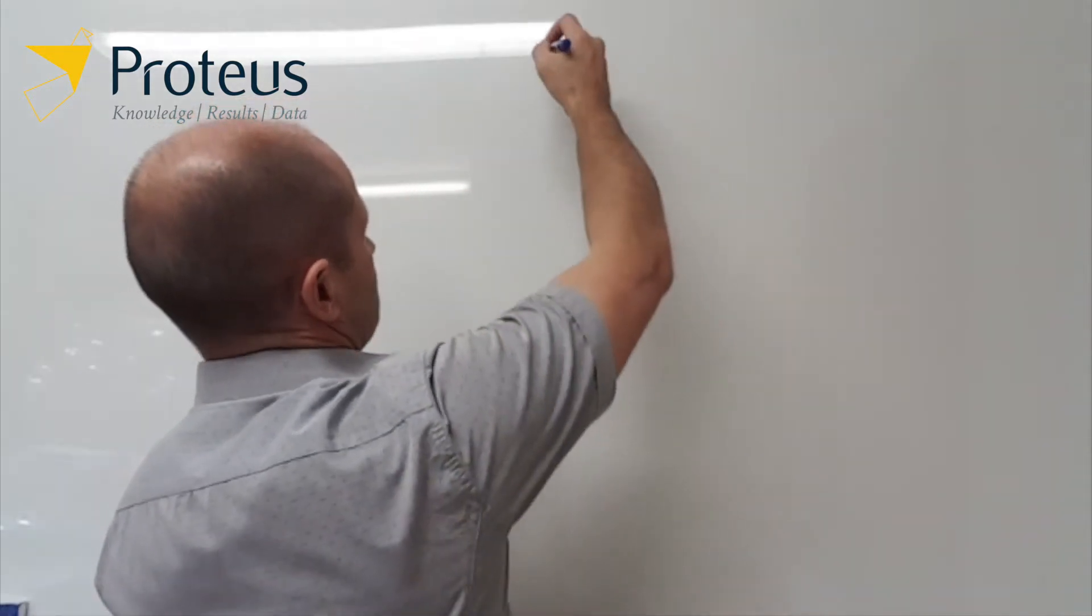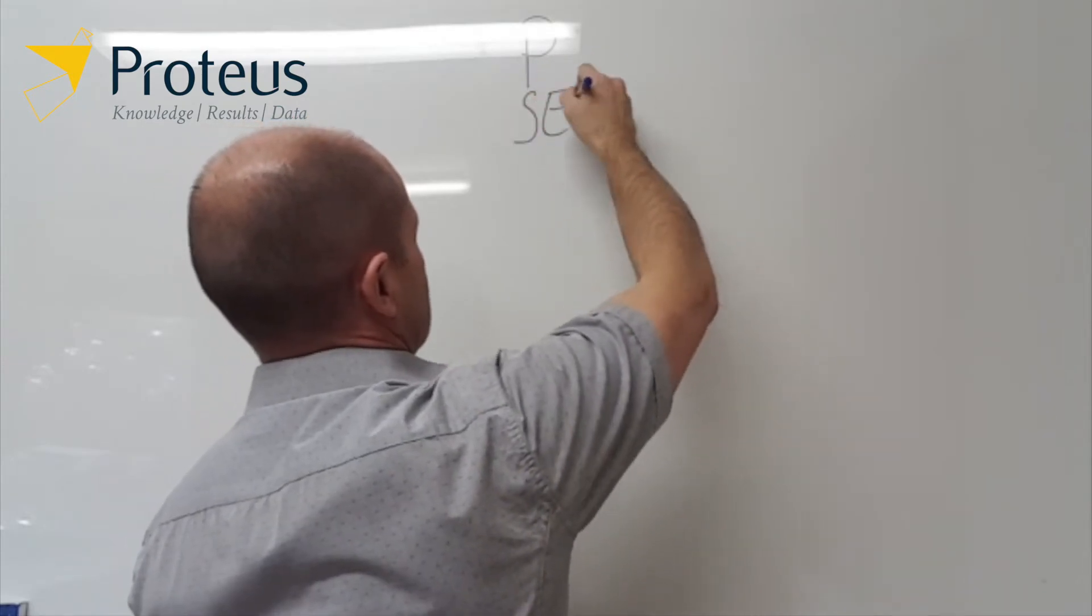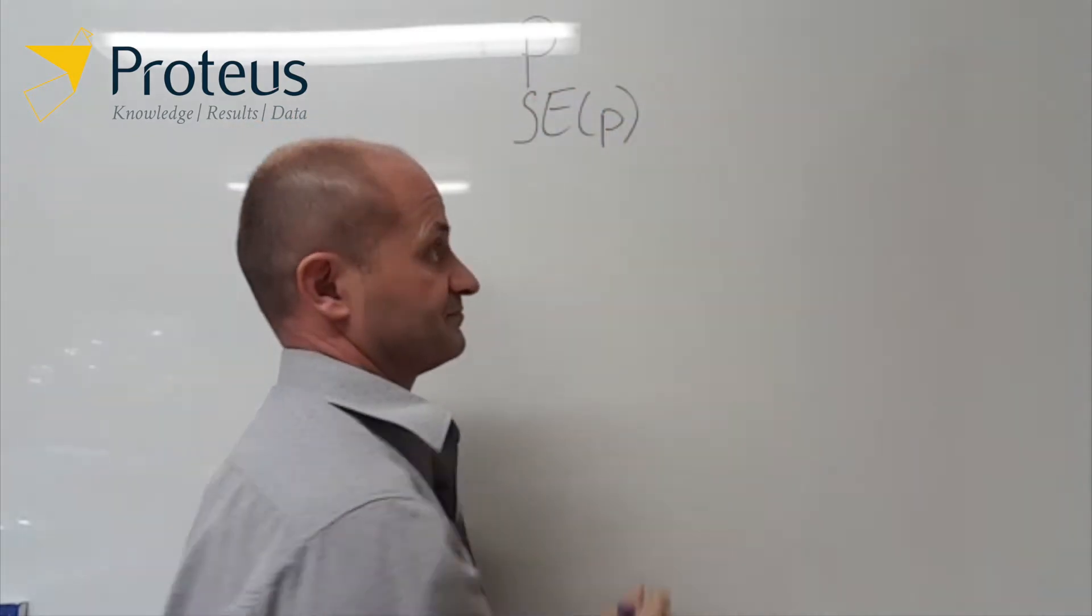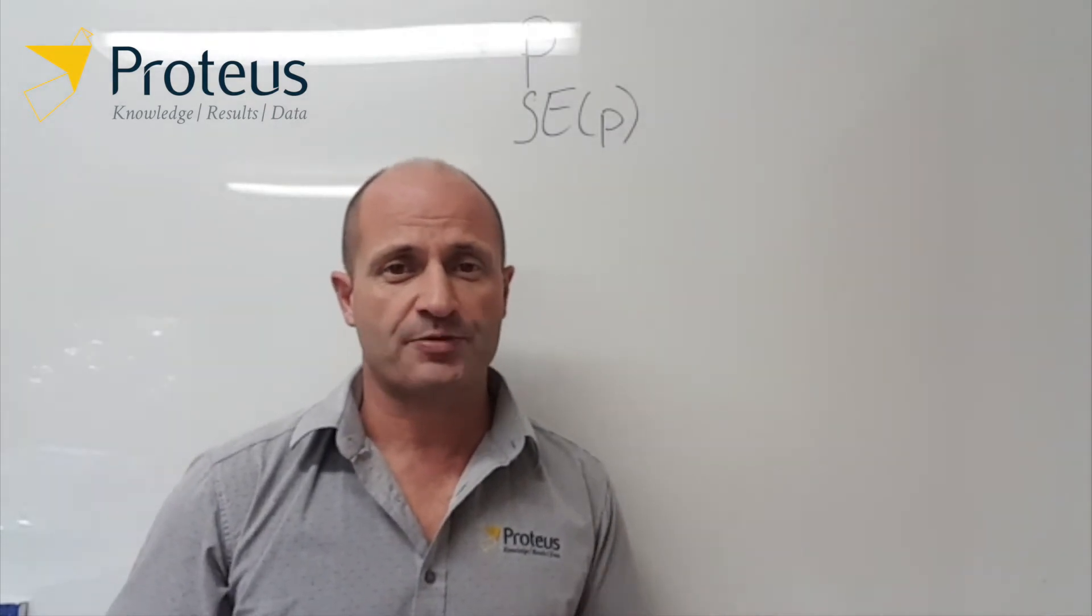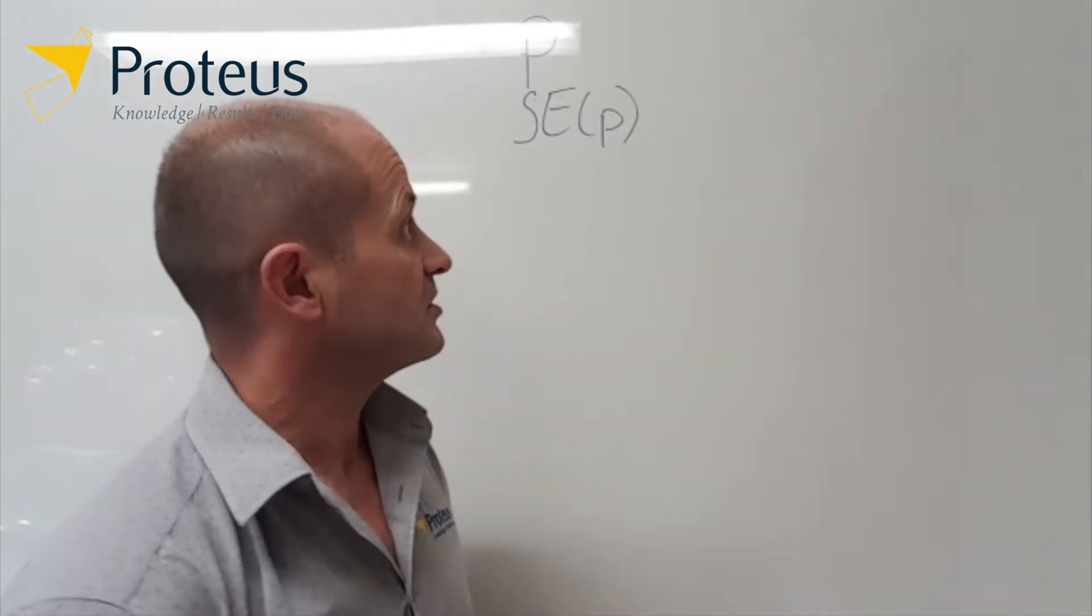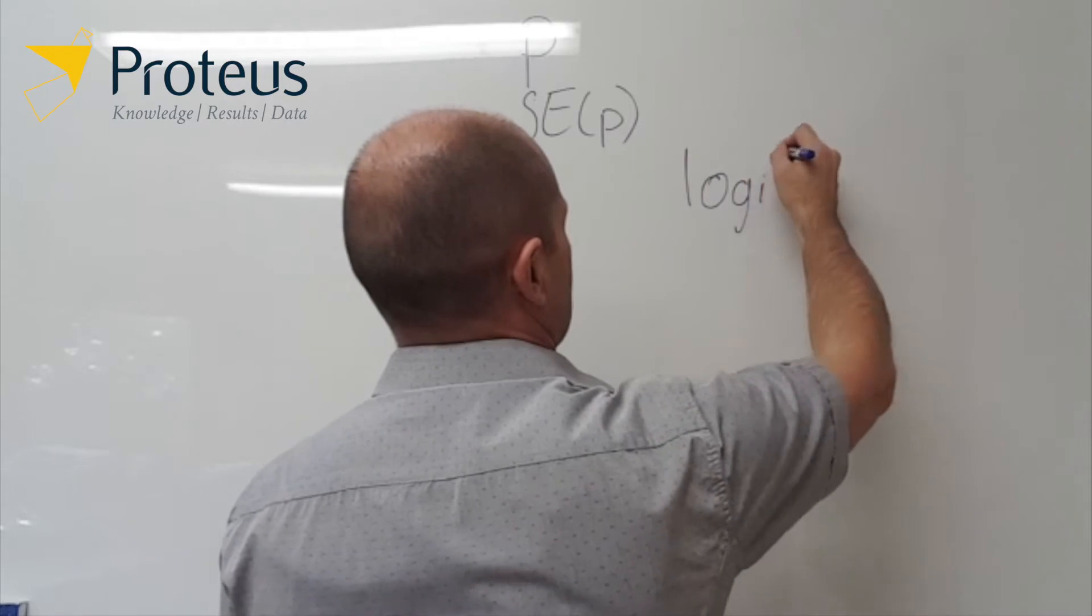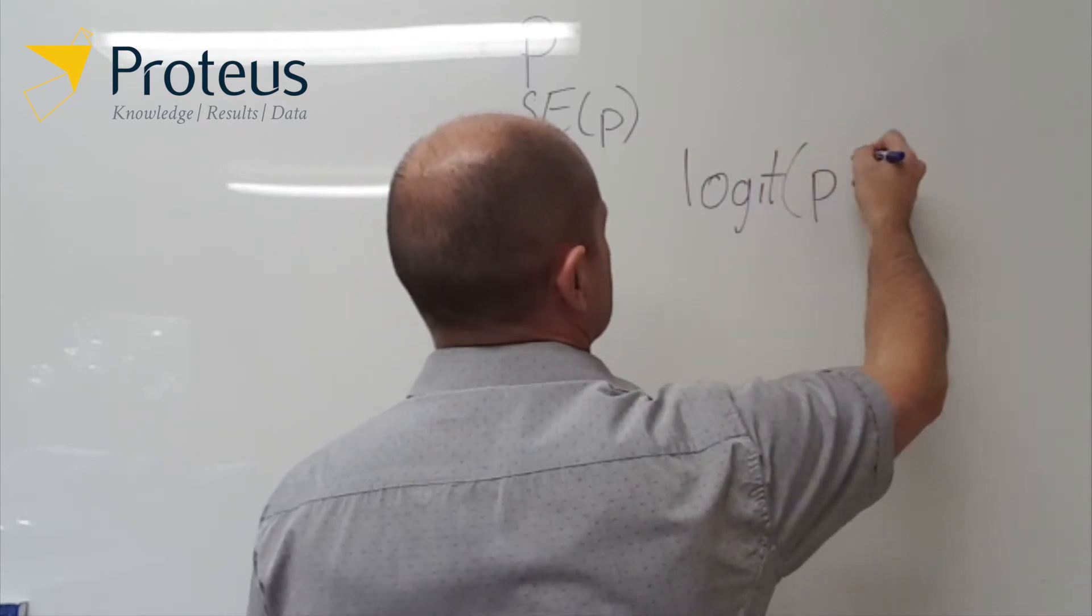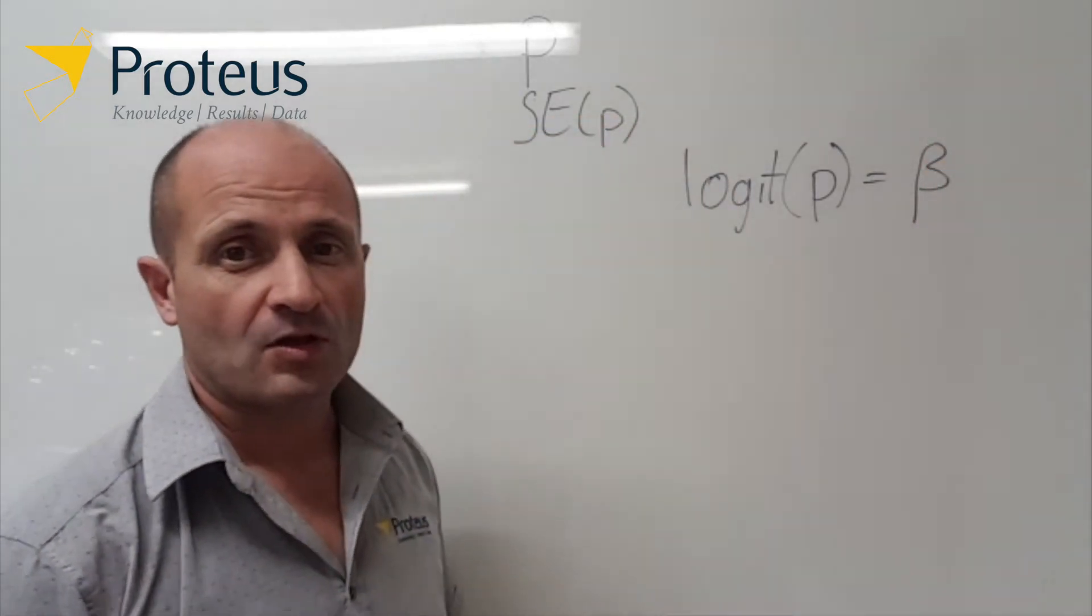So for example, suppose we have a probability, which I'll just call p, and we also have the standard error for that quantity. So we also have the standard error for p. Now, what we want to look at is we want to transform things onto the logit scale. So logit of that probability p, I'm just going to call that something called beta.